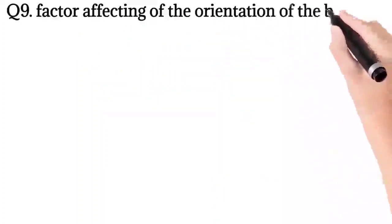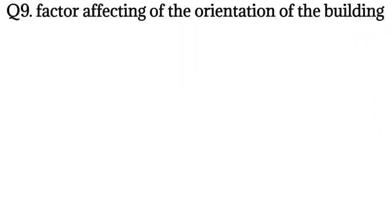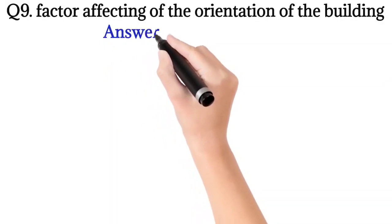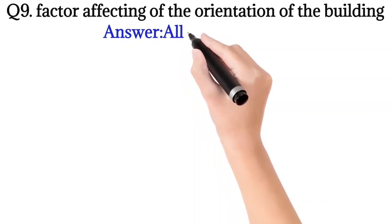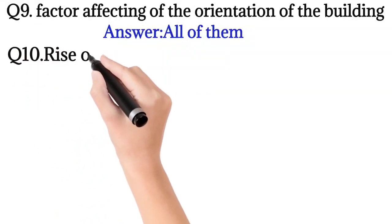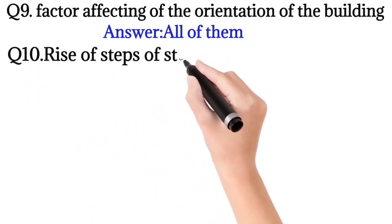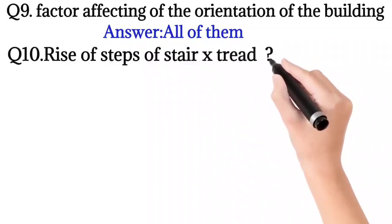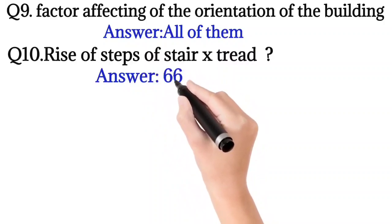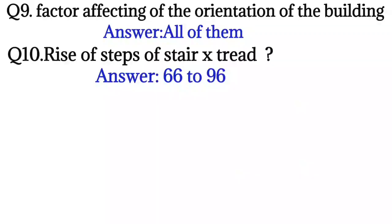Question number 9: Factor affecting the orientation of the building? So the answer is all of them. Question number 10: Rise of steps of the stair multiplied by tread? So the answer is 66 to 96.